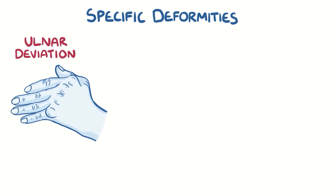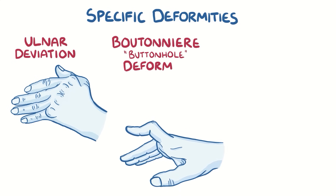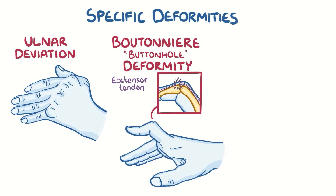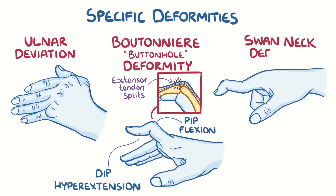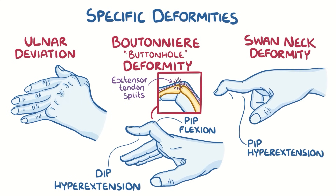Deformities are also common in the interphalangeal joints, such as the so-called boutonniere or buttonhole deformity. This occurs when the extensor tendon in the back of the finger splits, and the head of the proximal phalanges pokes through like a button through a buttonhole, causing flexion of the proximal interphalangeal joint and hyperextension of the distal interphalangeal joint. Another finger deformity is the swan neck deformity, which is the opposite — hyperextension of the proximal interphalangeal joint and flexion of the distal interphalangeal joint.